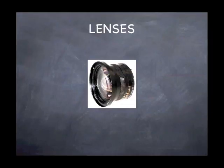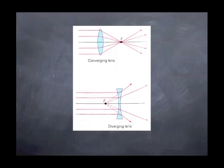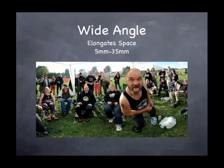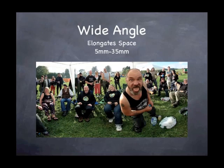Let's talk about lenses. A converging lens, or convex lens, is usually a wider lens. A concave lens, which is a diverging lens, is more of a telephoto lens. A wide angle lens elongates space and shows a lot more degree radius than a telephoto, which compresses space. Usually 5mm to 35mm shows more depth of field and more area, but it's distorted — the horizon lines will bend.